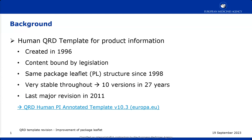We tried to keep the QRD template very stable as far as possible, because industry is not very happy when we make updates as they need to update all their product information annexes. All in all, it's been there for 27 years and we've had about 10 major versions with some small ones in between. The last major revision was in 2011, when we had a multi-stakeholder workshop with all the interested parties and revamped the package leaflet. But that was many years ago and now we need to do that exercise again.